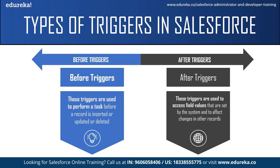After triggers are used to access field values that are already set by the system, such as a record's ID, date, or phone number field, and to affect changes in other records as well. These triggers are usually used to update or validate record values after they are saved to the database. Also, after triggers are read only — you cannot make any changes to them.